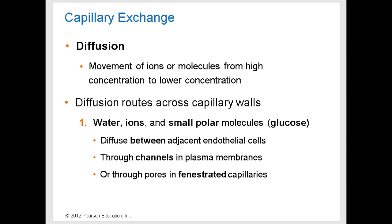We'll begin by looking at diffusion. Diffusion is the movement of ions or molecules from an area of high concentration to an area of low concentration. Diffusion occurs very easily in our capillaries because our capillaries have very thin walls. The capillary wall consists of really just an endothelium, which is a single layer of thin endothelial cells. This makes for a very short distance that materials have to travel to get from the blood to the interstitial fluid, or from the interstitial fluid into the bloodstream.